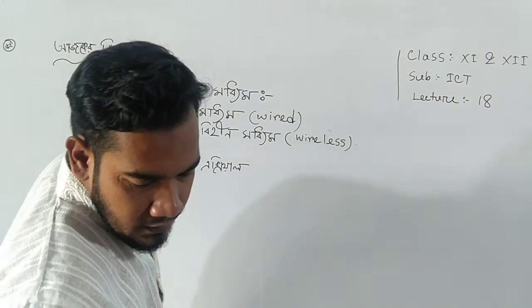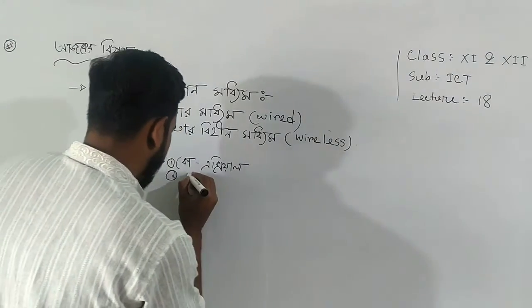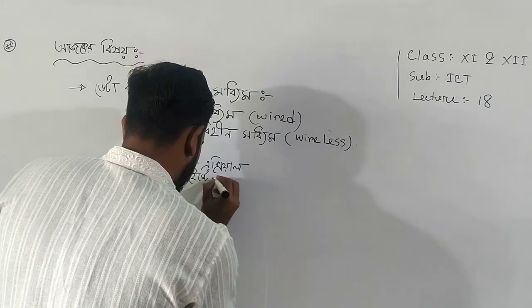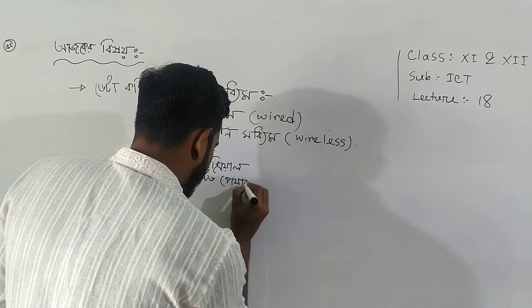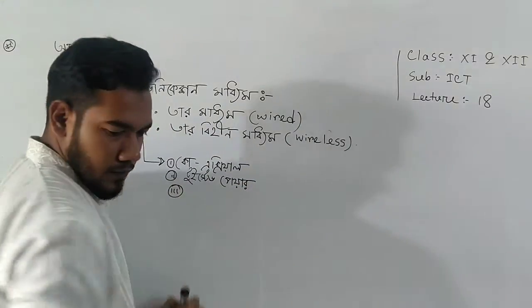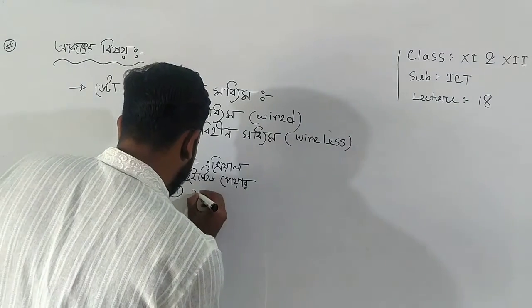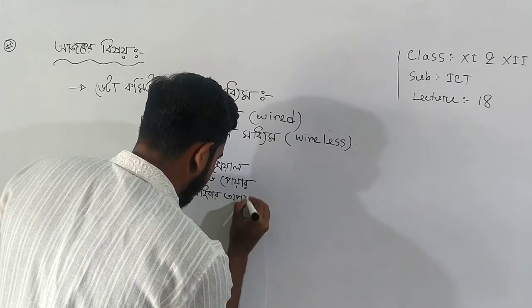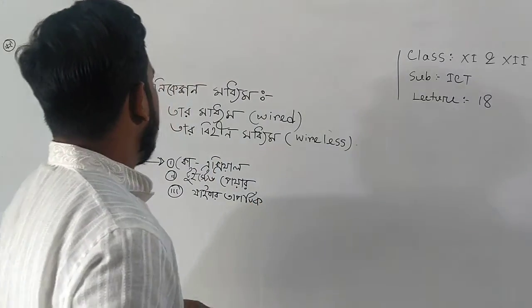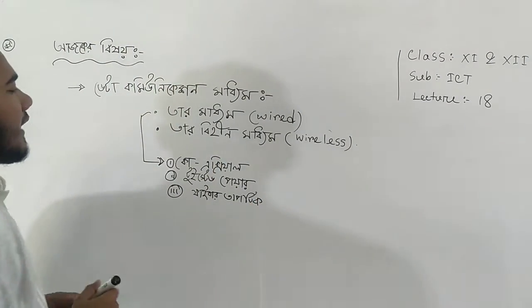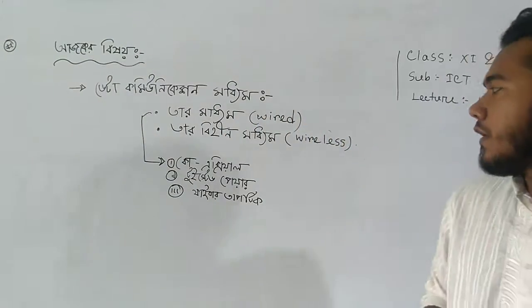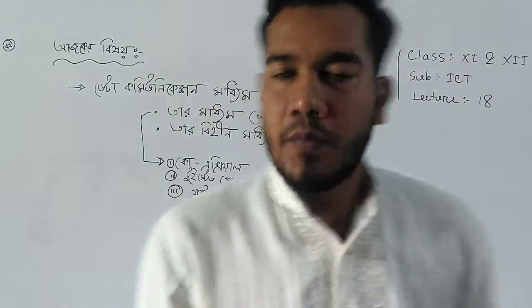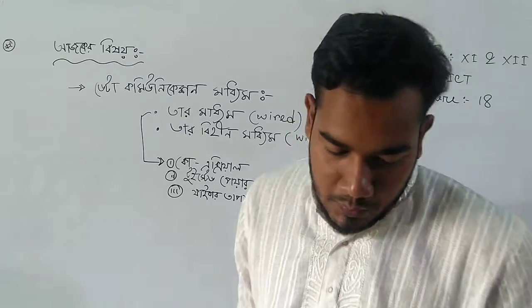So we have a twisted pair, a fiber optical, and a fiber. This is a coaxial cable, twisted pair cable, and fiber optical cable.